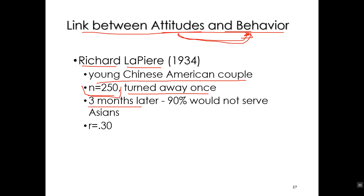However, three months later LaPierre mailed letters to all of those establishments asking whether they allowed Chinese people to stay there. 90% said they did not allow Chinese people. So the attitude is fairly racist, but the behavior was almost perfectly non-racist. LaPierre clearly demonstrated in 1934 that the link between attitudes and behavior is very weak.